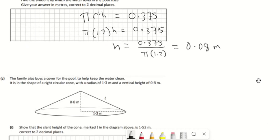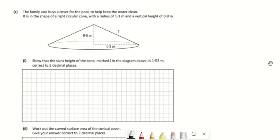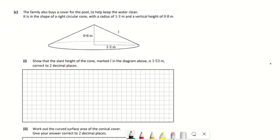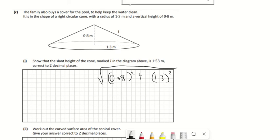Part C: show the slant height of the cone is 1.53. That's just going to be using Pythagoras—it's a right angle triangle there. We're looking for the long side, so we're going to do 0.8 squared plus 1.3 squared, add those together, then get the square root of the answer, and when you do that you should get 1.53.